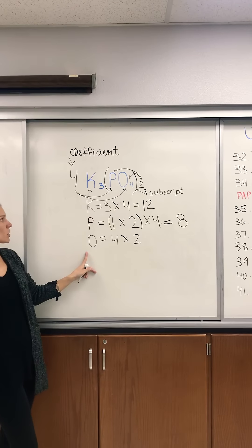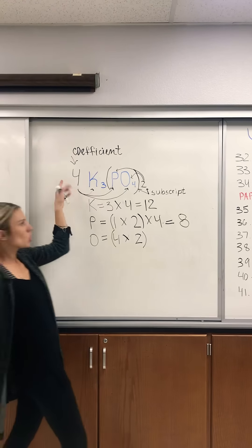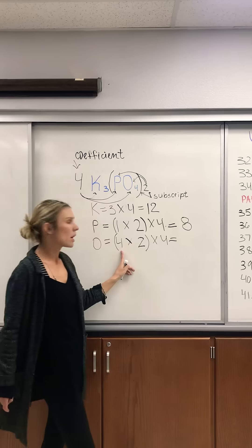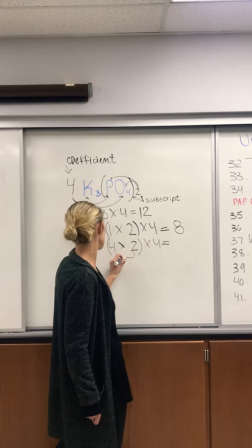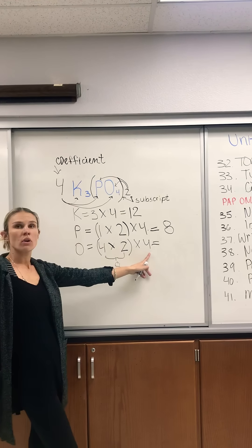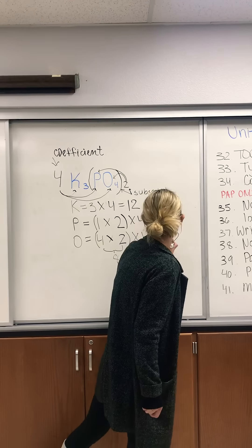My last one is oxygen. I have to bring up the coefficient, so I put times four. Let's do the math. Four times two is eight, and eight times four is 32. So 32 is my final answer.